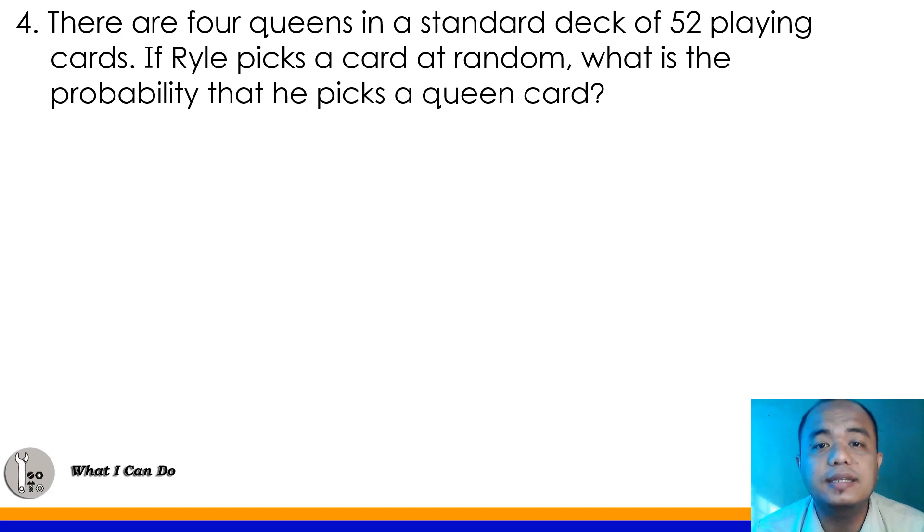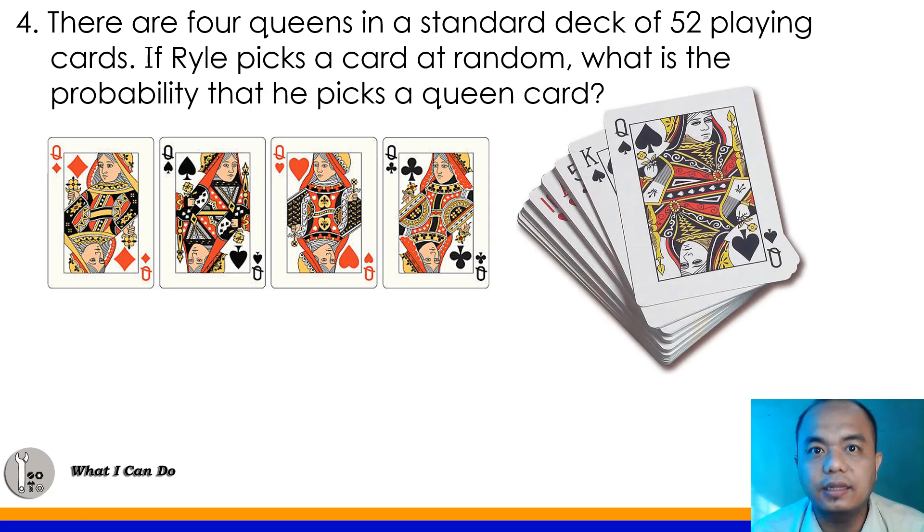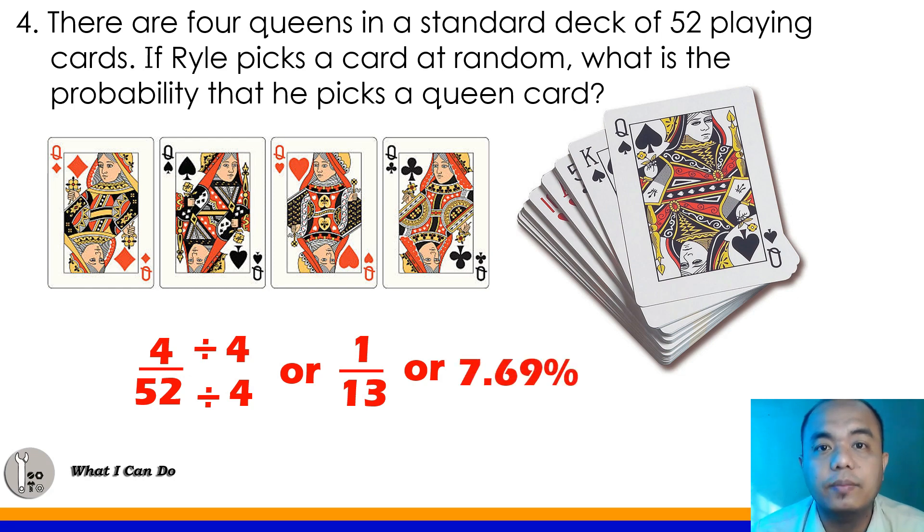Number 4. There are 4 queens in the standard deck of 52 playing cards. We have four queen cards in our 52 playing cards. 52 total. Now, if Ryle picks a card at random, what is the probability that he picks a queen card? Any kind of queen cards is fine. So, how many total queen cards do we have? Very good. We have 4 out of 52. And then, simply divide by their GCF, which is 4. 4 divided by 4 is 1. And, 52 divided by 4 is 13. Or, in percent, that is 7.69%. So, that means, about 7.69% is the chance that we will pick a queen card from our deck of cards here, from our 52 playing cards.